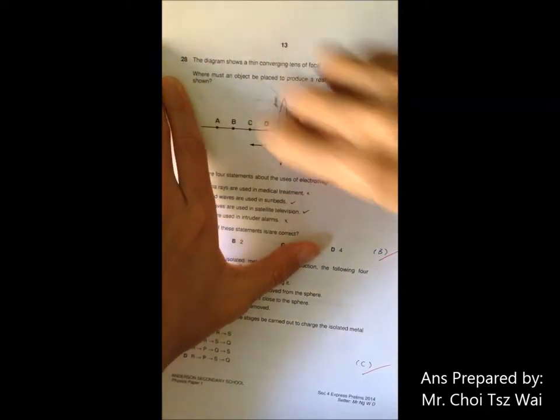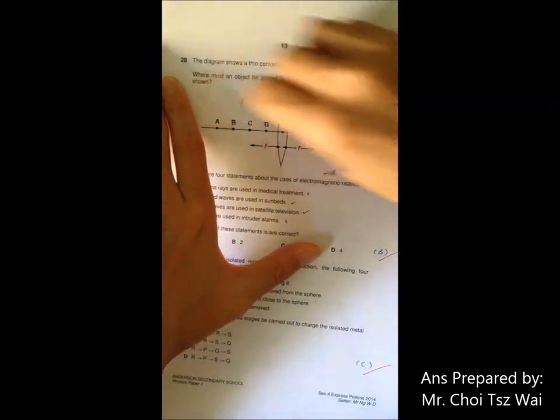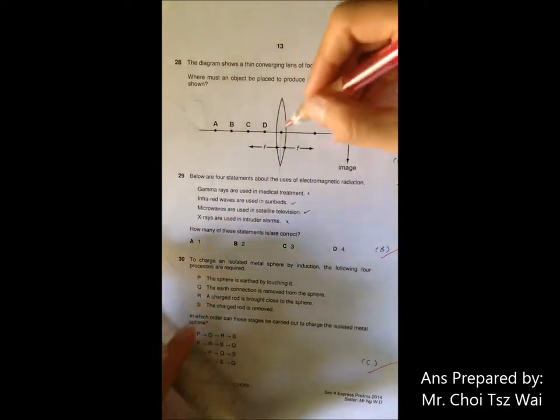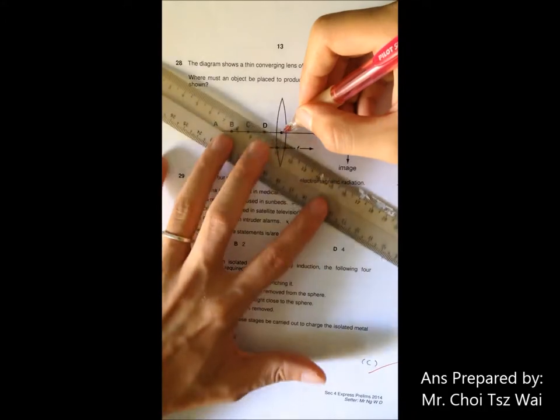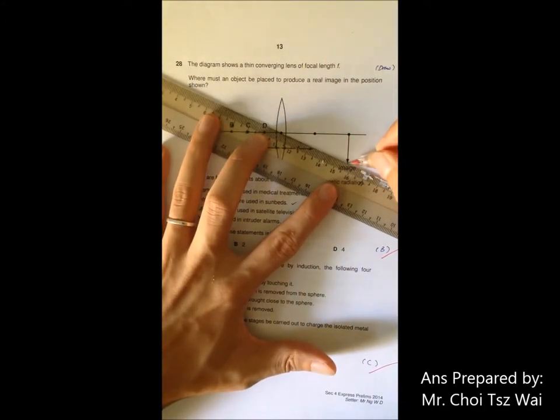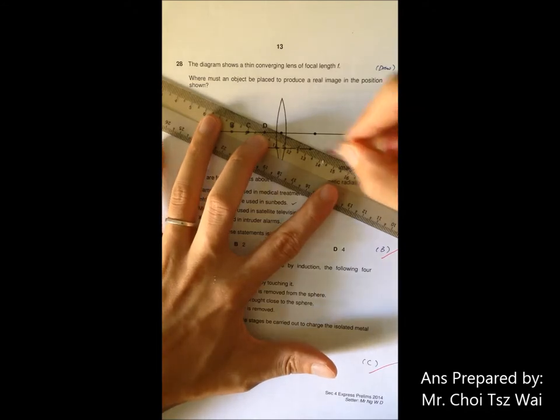Okay, for question 28, you have to do the ray diagram in reverse. What I do is that I will do it again to show you how I deduce everything. So I know the image is here and I know the optical center is here. When you draw a ray diagram, this will always be a straight line, so draw the straight line first. I know that this must be my first ray.